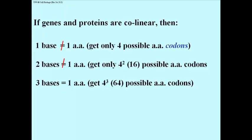Two bases, you'll only get four squared or 16 possible codewords, and therefore you could only code for 16 amino acids. And of course we know that proteins are made up of 20 different amino acids.